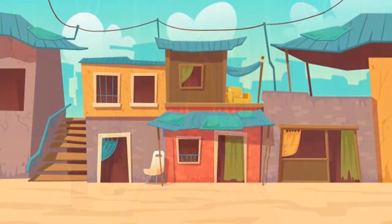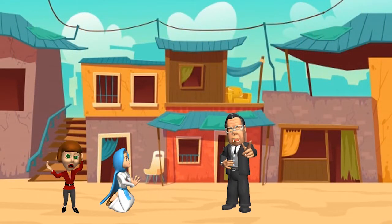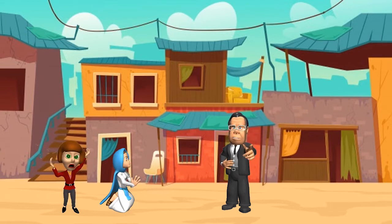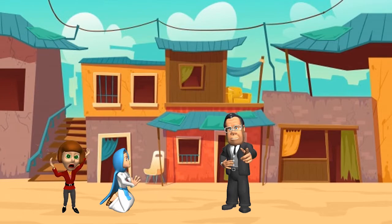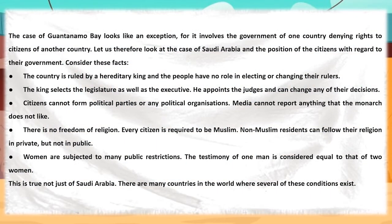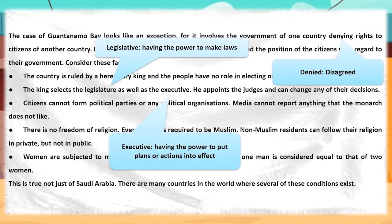Let's check the facts about citizens of Saudi Arabia based on their rights. The people of the country have no right in electing or changing rulers. The country is governed by a hereditary king, meaning after a king dies, his son or a person of his lineage would ascend the throne. The king holds both executive and legislative powers. He has the power to exercise the rules of the country, appoints ministers and judges, and can make changes in their decisions.